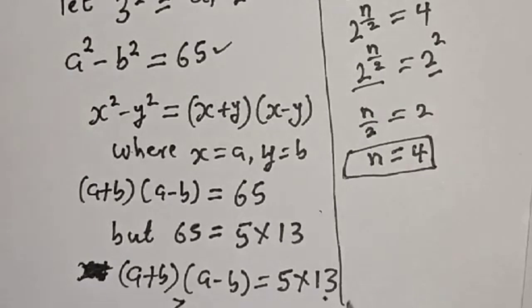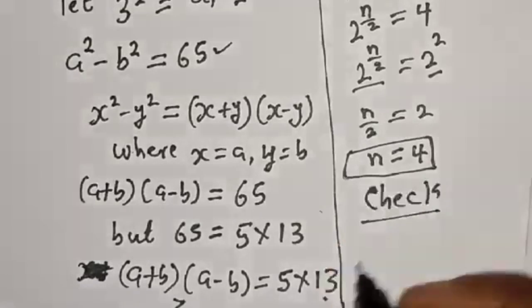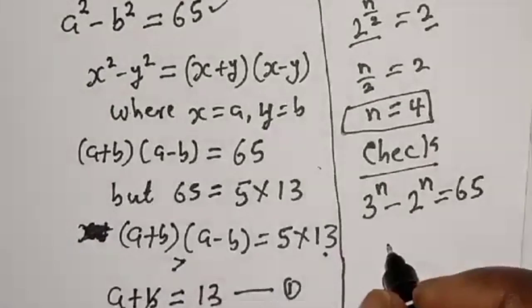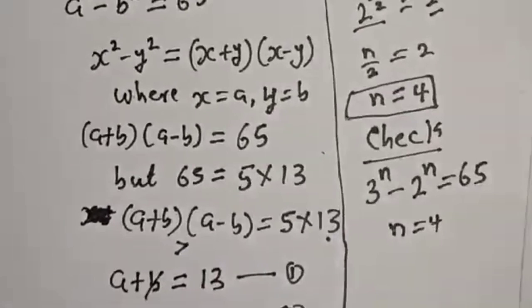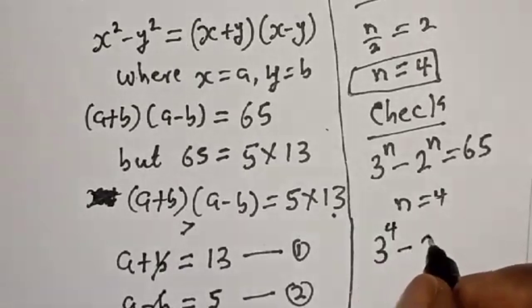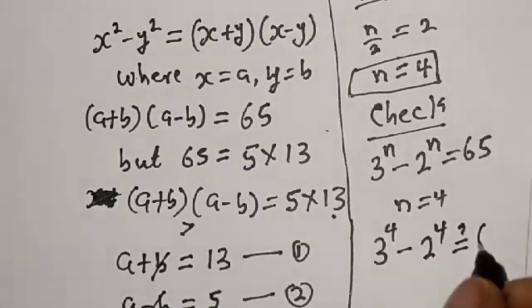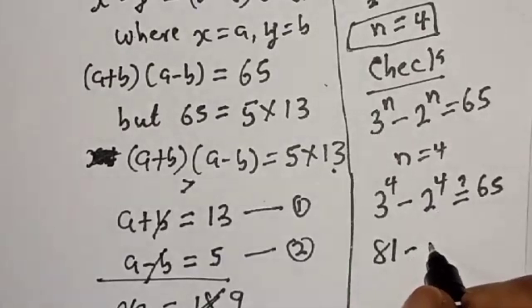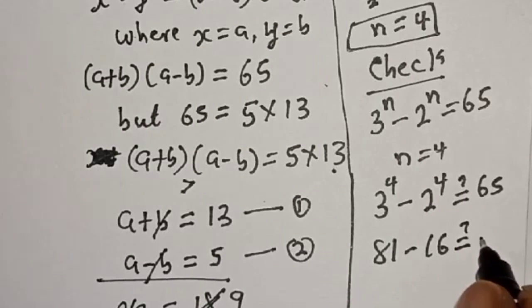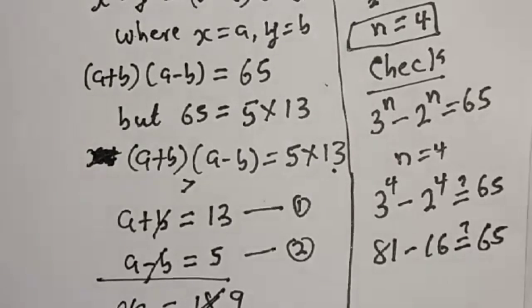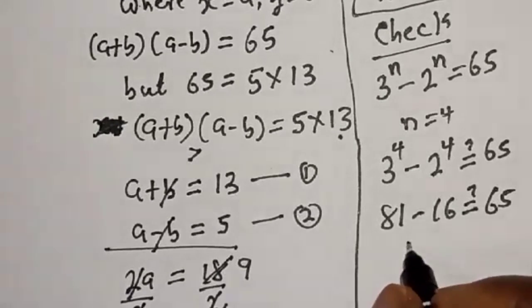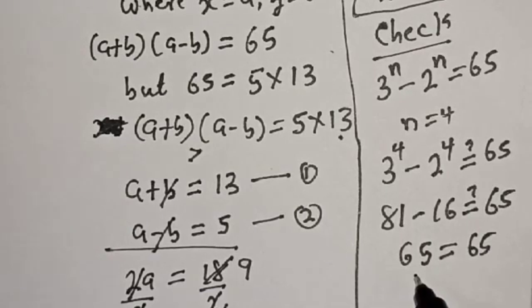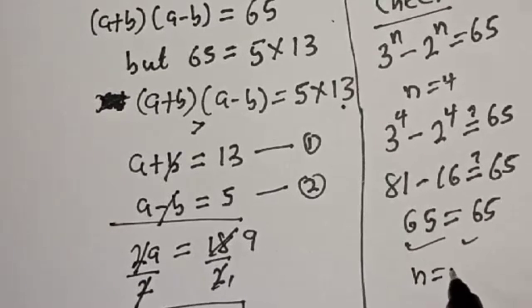Let's verify our answer. 3 raised to power n minus 2 raised to power n must equal 65. With n equal to 4, we have 3 raised to power 4 minus 2 raised to power 4, which is 81 minus 16, equal to 65. This equals 65, which satisfies the given equation at n equal to 4.